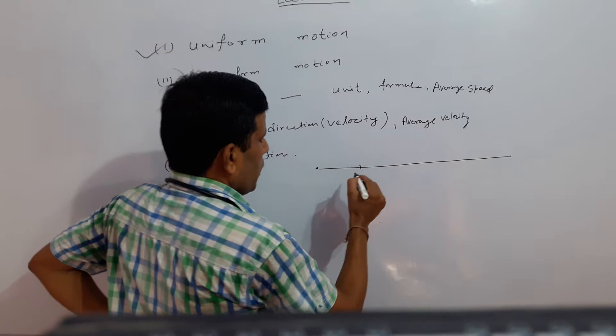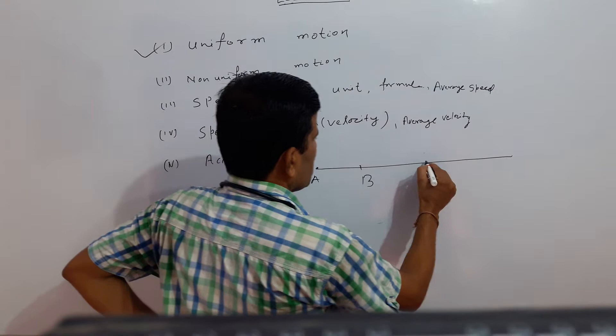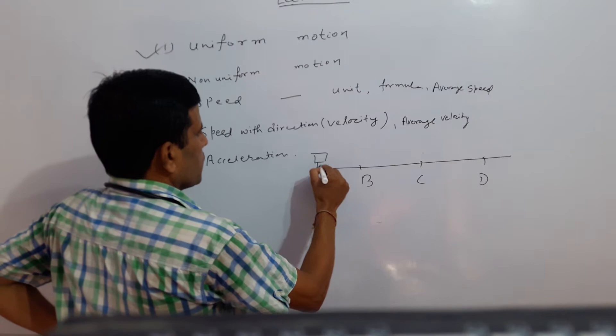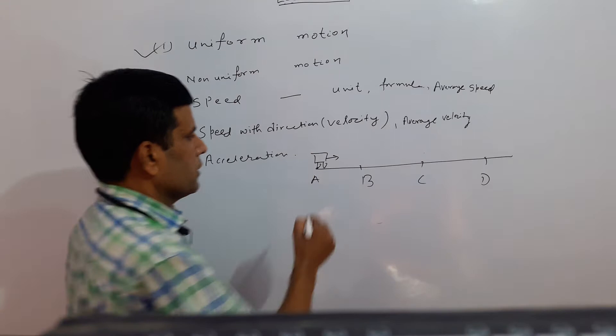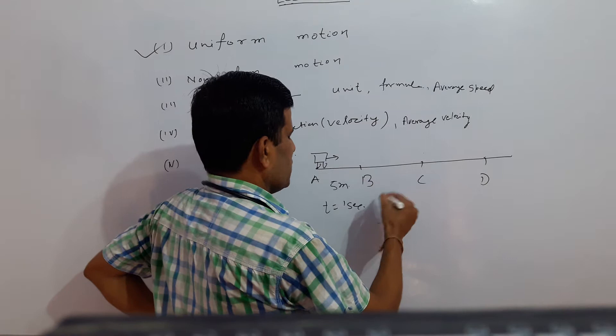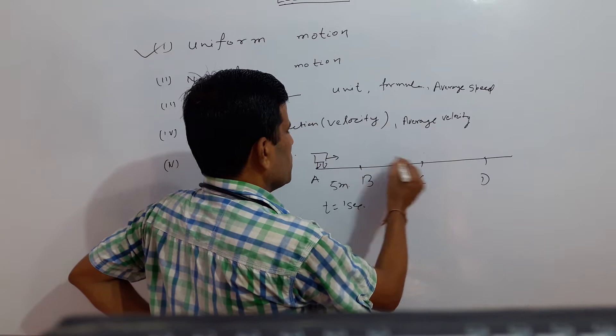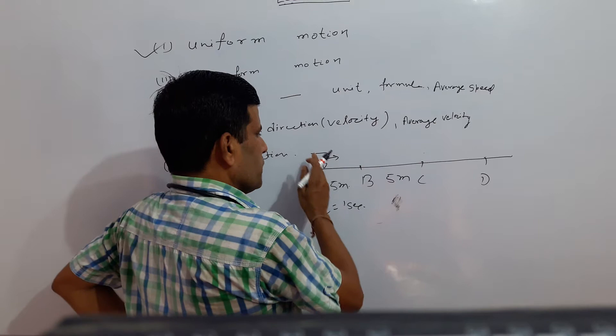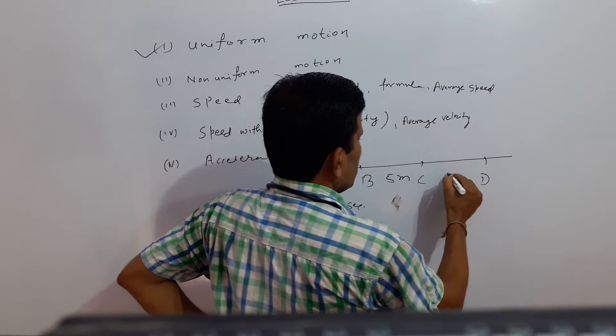For example, this is your point A, this is point B, this is point C, this is point D. For example, this car is now moving. From point A to B, distance is 5 meters — I am taking. Time taken is 1 second. Similarly, from B to C, if it travels 5 meters in 1 second, it means every second this object travels 5 meters distance.